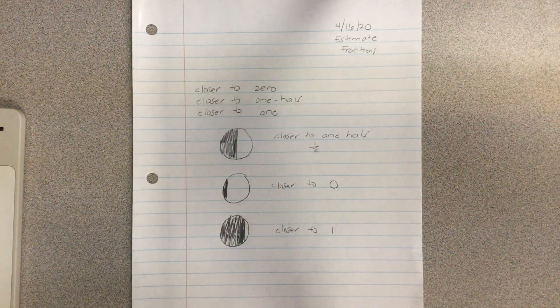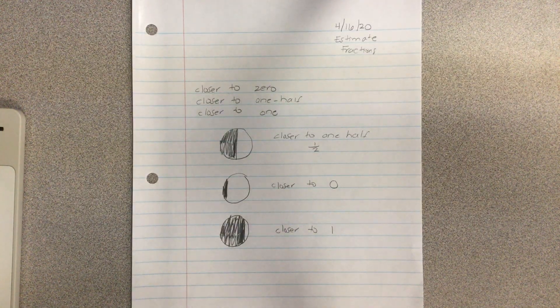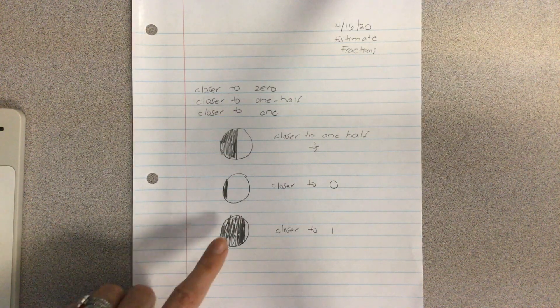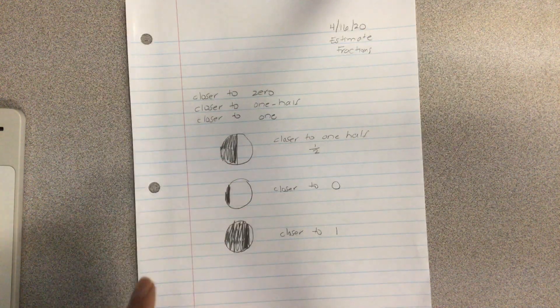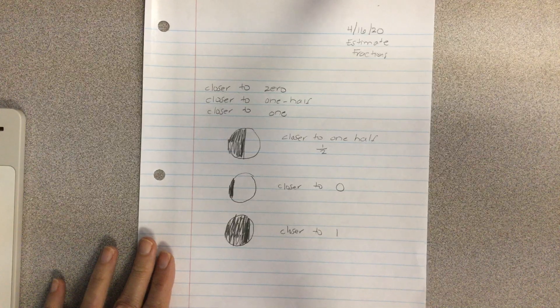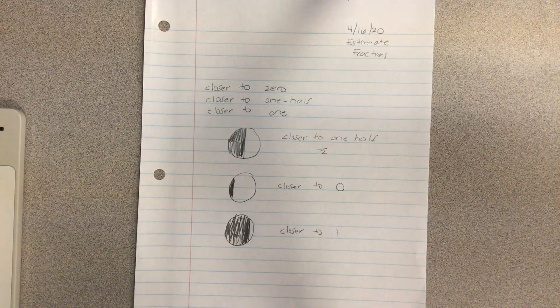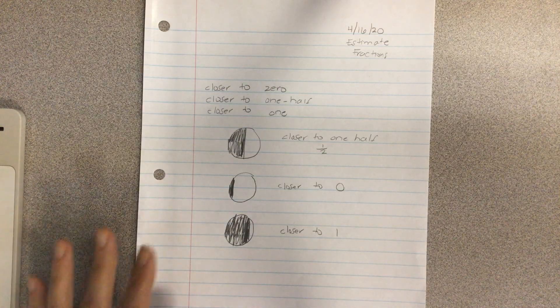So you're going to be given today on your worksheet, it's page 97, and you're going to be given some problems that look just like this with items shaded. You're going to decide if it's closer to one half, closer to zero, or closer to one. When you finish with this item, you are just going to keep it because we will be checking it on Friday.